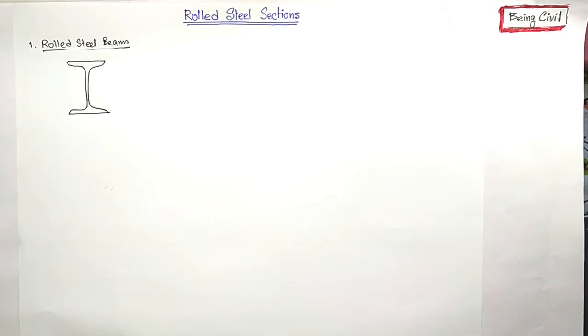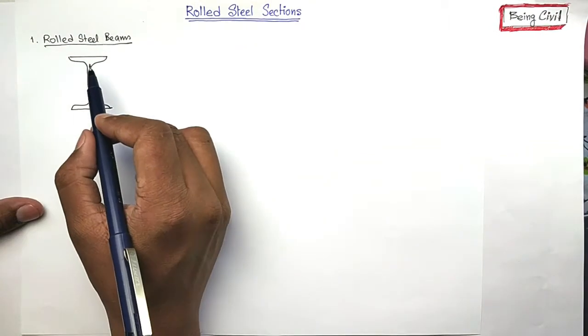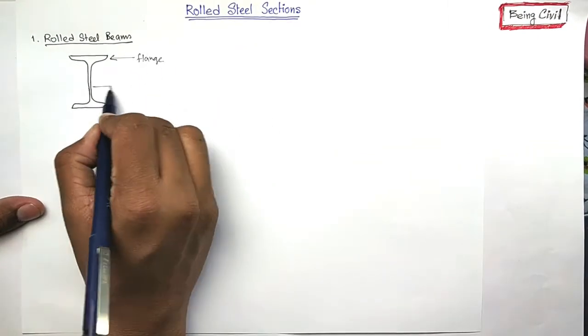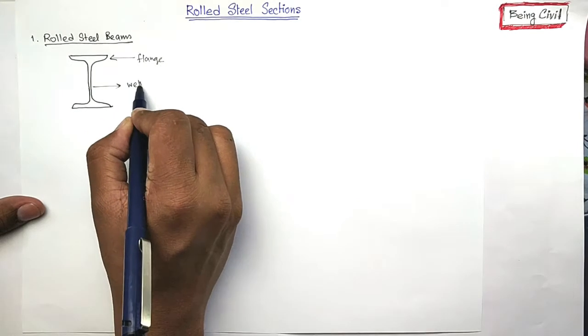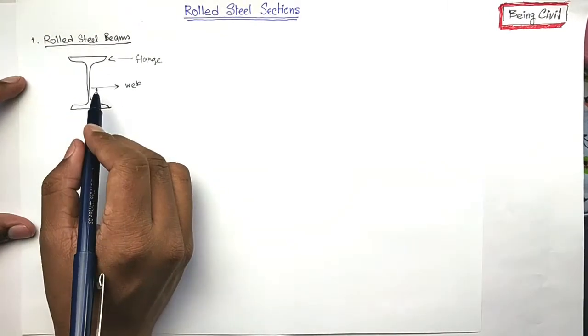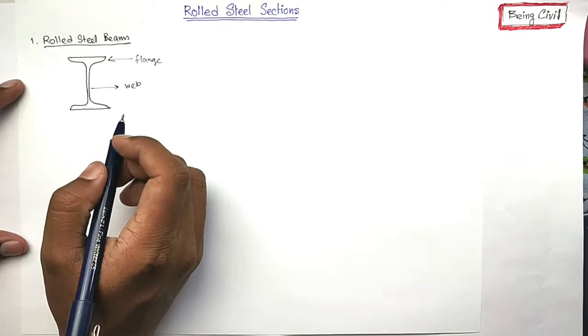Number one is rolled steel beams, also called I-beams. The shape of the beam is like I, this is called flange and this portion is called web. You get all the properties of the beams and other sections from steel handbook SP6, 1964.